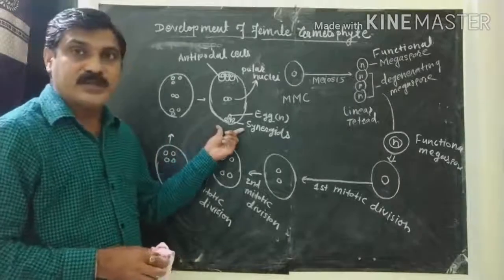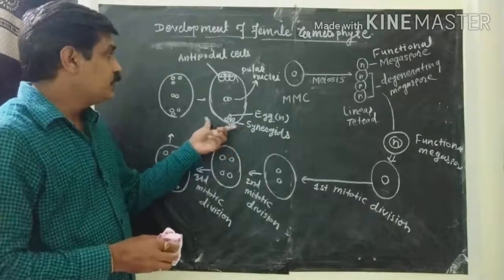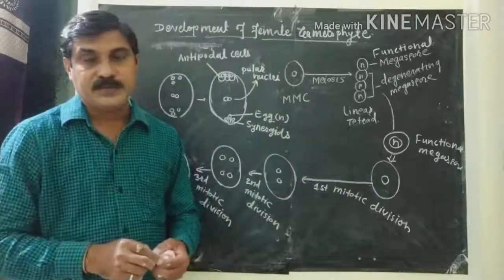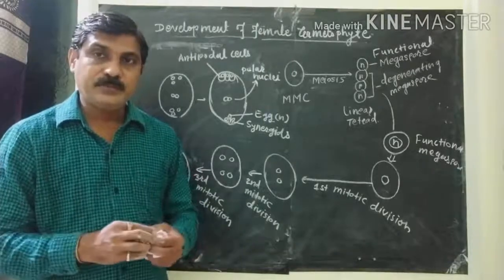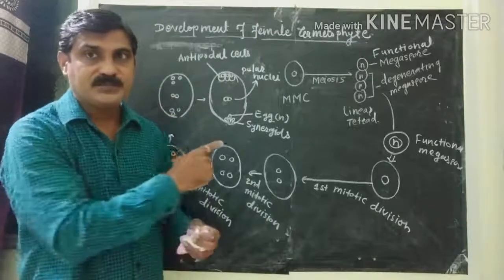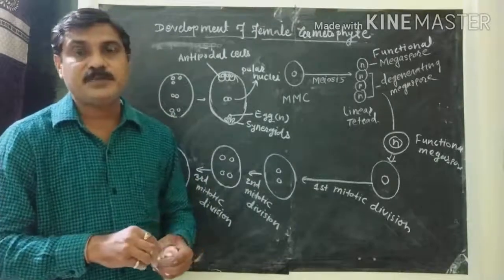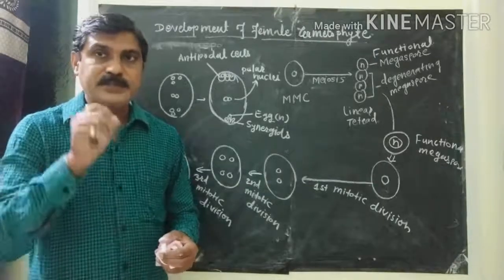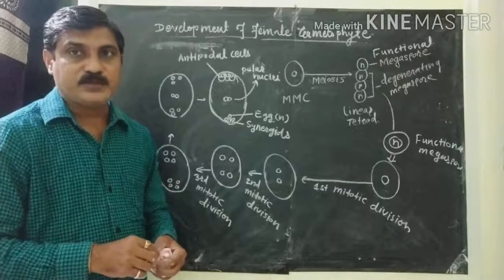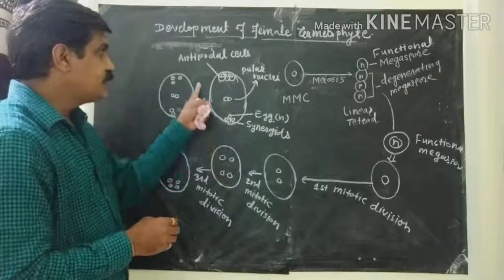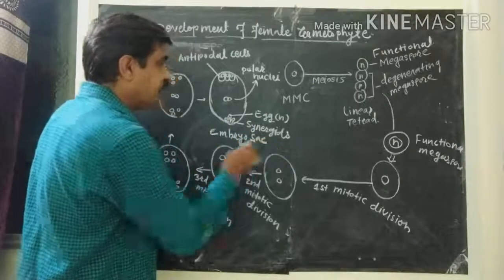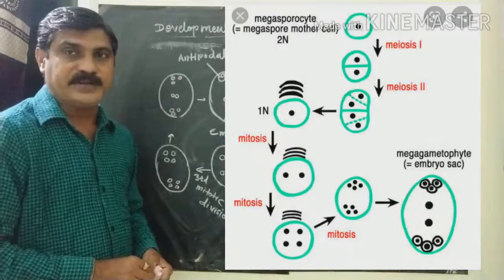This structure formed is finally known as the embryo sac. This process is known as the monosporic development of the embryo sac, because this development takes place from only one megaspore — the functional megaspore. It is also known as endosporic development because it takes place within the megaspore. Thus the structure of the embryo sac is formed, and that is all about the development of the female gametophyte. Thank you.